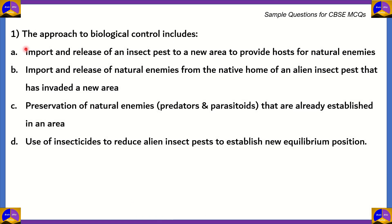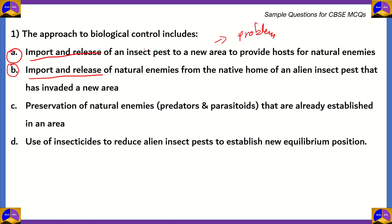Now let's look at our first question. The approach to biological control includes: (A) import and release of an insect pest to a new area to provide hosts for natural enemies; (B) import and release of natural enemies from the native home of an alien insect pest that has invaded a new area; (C) preservation of natural enemies already established in an area; (D) use of insecticides to reduce alien insect pests to establish a new equilibrium. Options A and B contain the words 'import and release' — we import or release organisms when we have a particular ecological problem — so options A and B are incorrect, as they're not the approach to biological control.